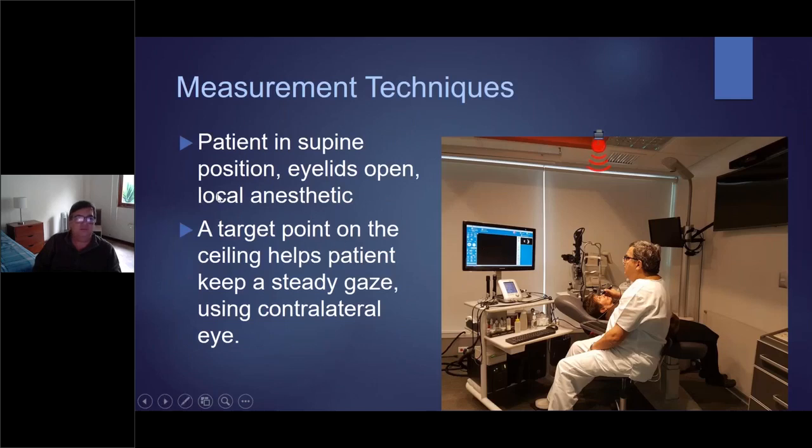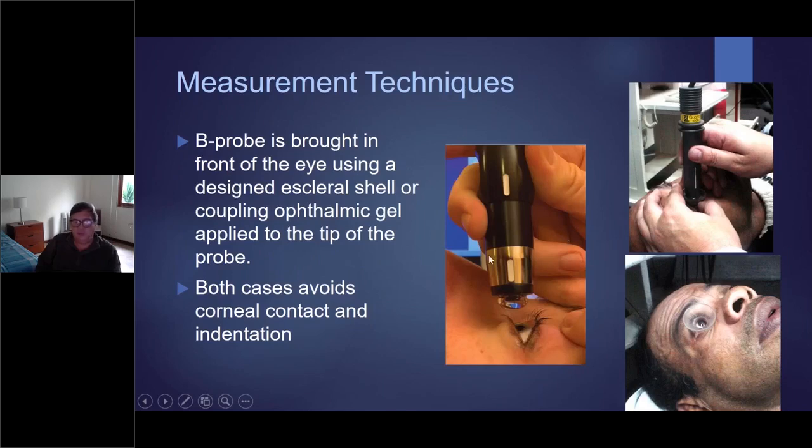Again, patient supine position, eyelids open, local anesthetic, a target point in the ceiling. Help the patient to keep a steady gaze using the other eye, the contralateral eye. And then you can use both. You can use the scleral shell like I always do, but you can also use direct with a lot of gel. I prefer to do it with the scleral shell. For me it's easy. If you can do a speculum, you can do it. If you can do gonioscopy, you can do it. If you can touch the eye, this is without any problem. This is designed to be fixed by itself, and you avoid the corneal indentation and also corneal abrasion.